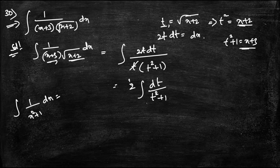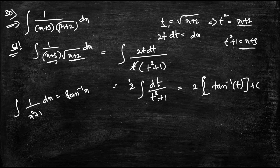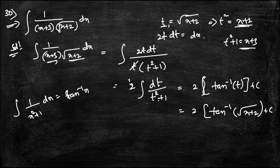Using the formula ∫1/(1+x²) dx = tan⁻¹(x), this becomes 2·tan⁻¹(t). Substituting back t = √(x+2), the final answer is 2·tan⁻¹(√(x+2)) + C.